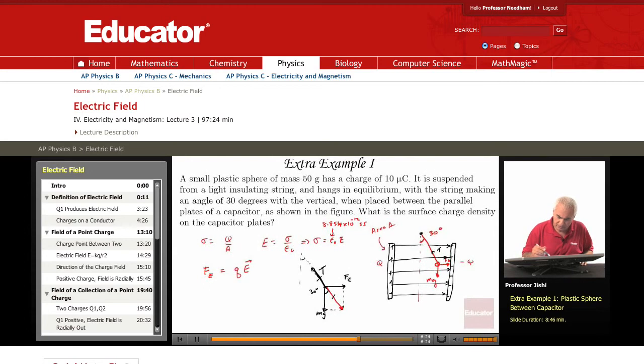So tangent 30 is opposite over adjacent. The opposite is FE, which is QE, divided by the adjacent, which is MG. So E is equal to MG tangent 30 over Q.